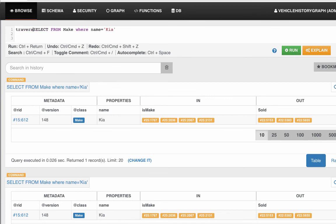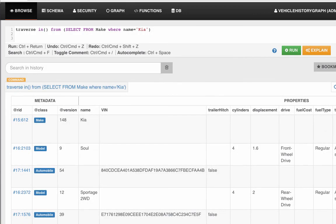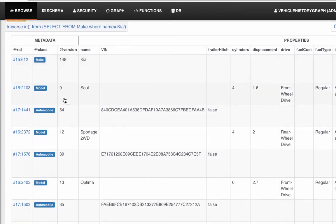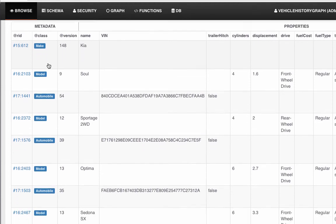When we do traverse in from that vertex, we see all of the vertices that are reached by traveling the in edges. We see the vertex we started at, we see the model Soul, we see an automobile,